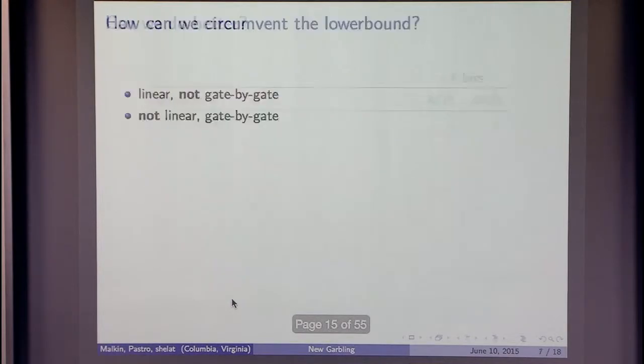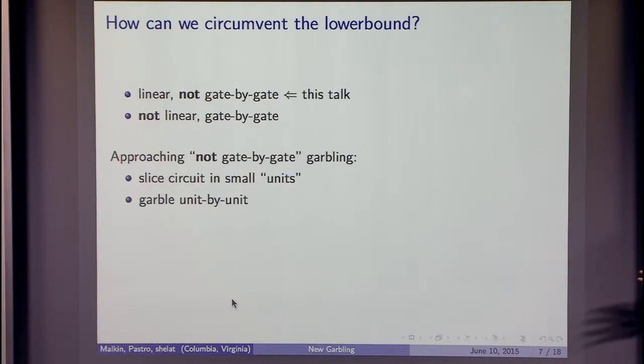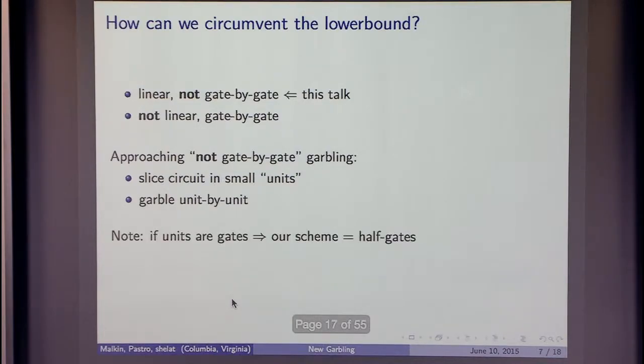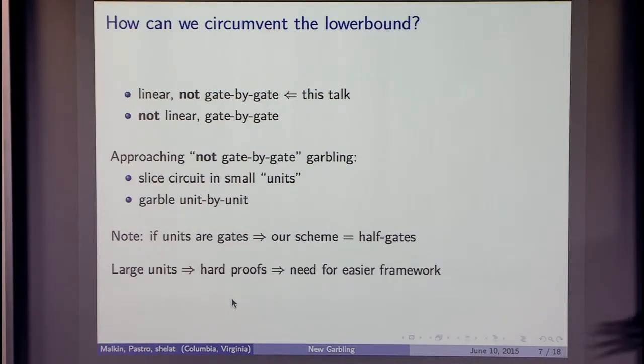But then you can circumvent this lower bound just having not gate by gate schemes or not linear schemes. In this talk, I'm going to talk about not gate by gate schemes that are still linear. So our scheme is not gate by gate, and the way we approach it is by slicing the circuit in units, and then garble unit by unit. A cool feature of the scheme is that if you cut the circuit into gates, you get the Half Gate paper. But if you have bigger units, it's hard to prove simulation-based security. Therefore, we invented this new framework that allows you to prove things more easily.